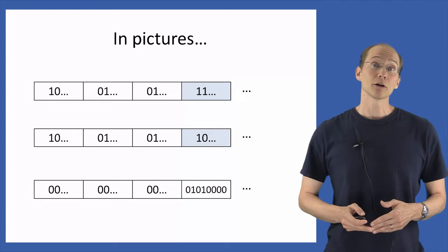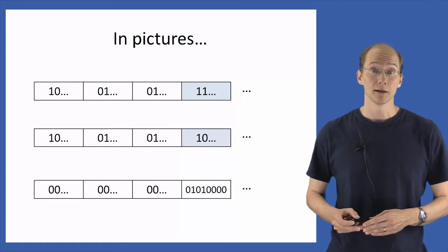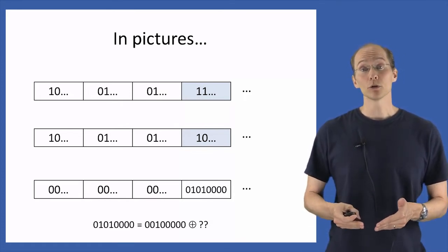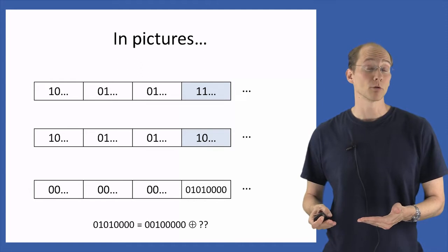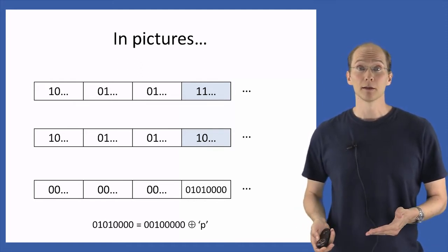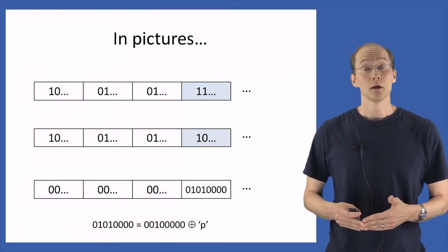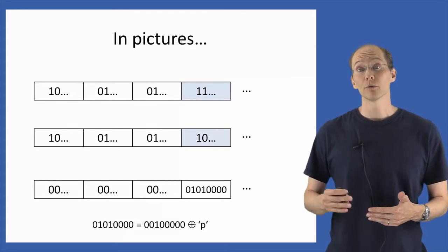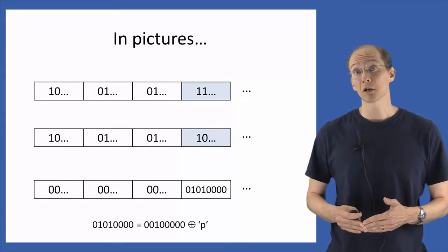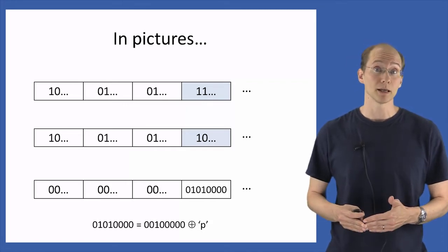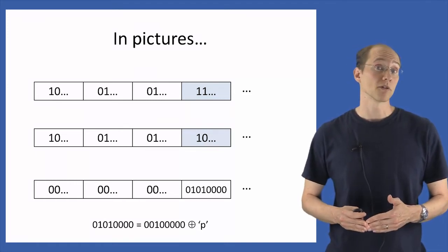The attacker doesn't know whether the first plaintext has the letter and the second has the space, or vice versa, but it can guess with high confidence that one of those highlighted bytes corresponds to a letter in the underlying plaintext and the other corresponds to a space. Given that, the attacker can look at the full value of the fourth byte in the XOR of the two ciphertexts, and knowing it equals the XOR of a space character with some letter's ASCII representation, can easily solve to see that the letter is the lowercase letter P. If you extend this analysis, the attacker can learn lots of information about each of the underlying plaintexts, and things get even worse if multiple plaintexts are all encrypted using the same key.